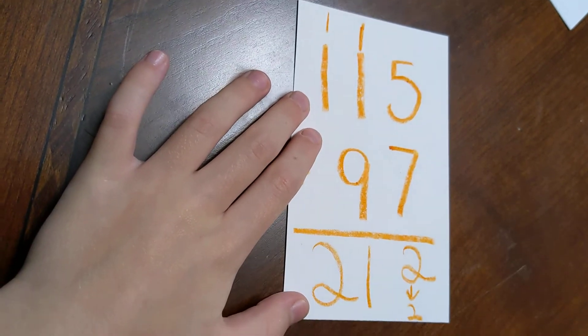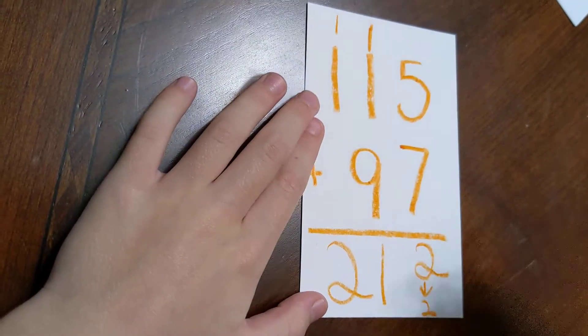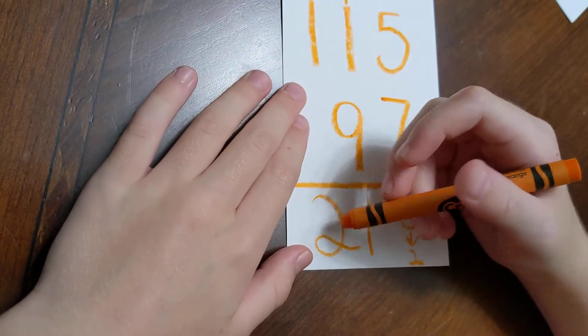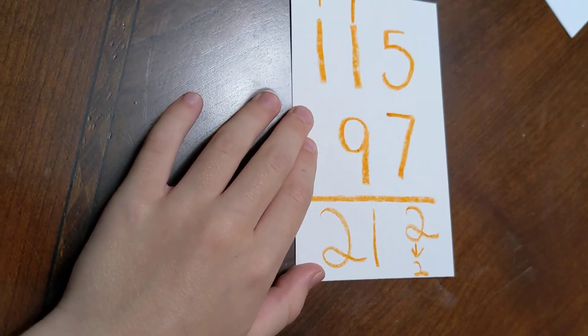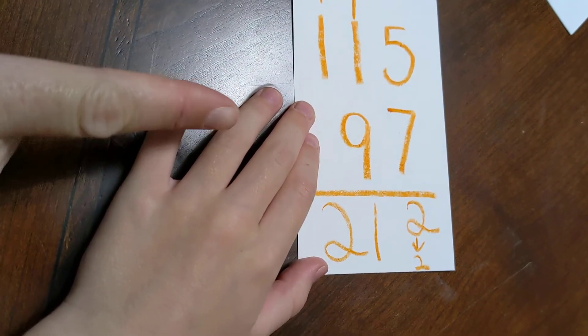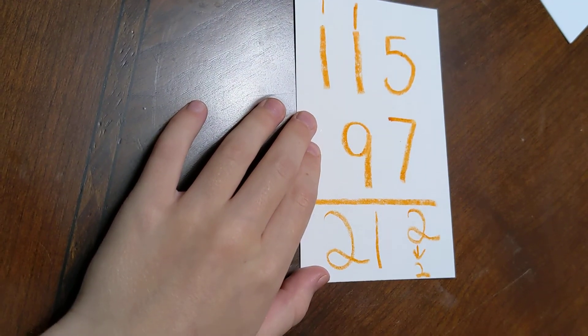So, 1 plus 1 is 2. Now we're at what number? Now, it's 212. So, 115 plus 97 is 212? Yeah.